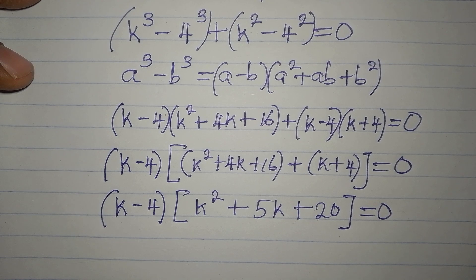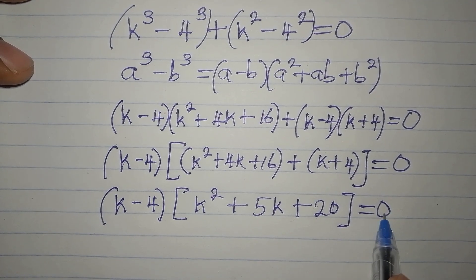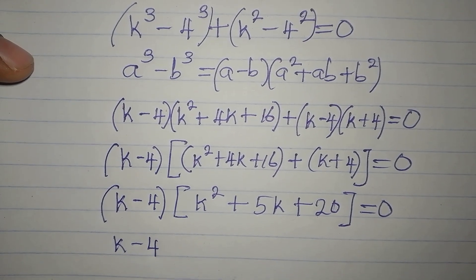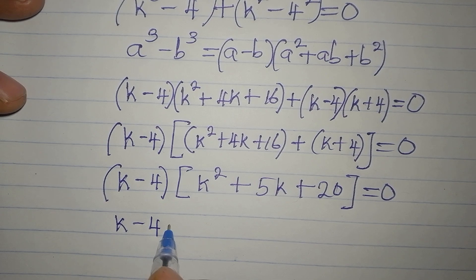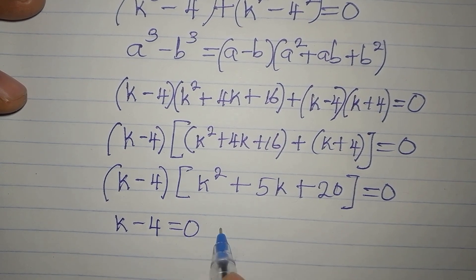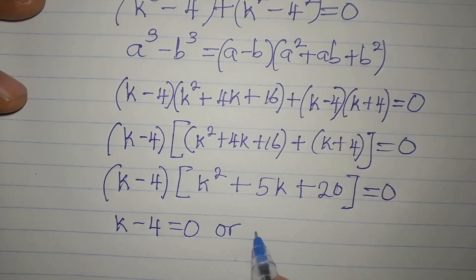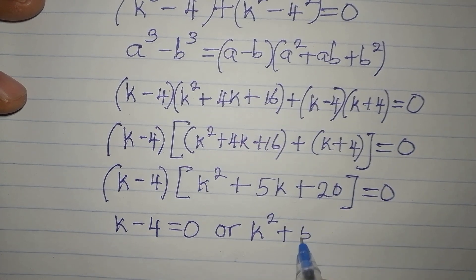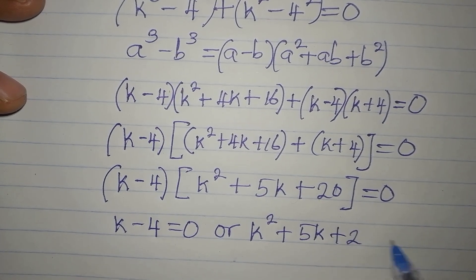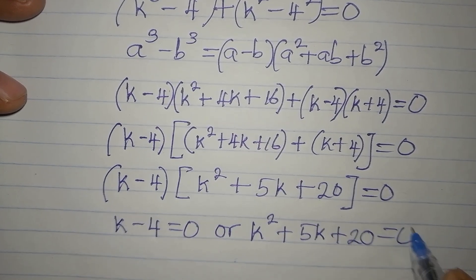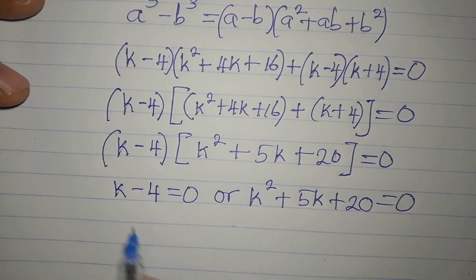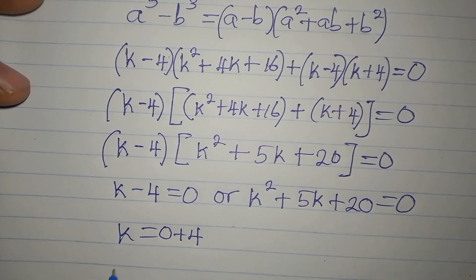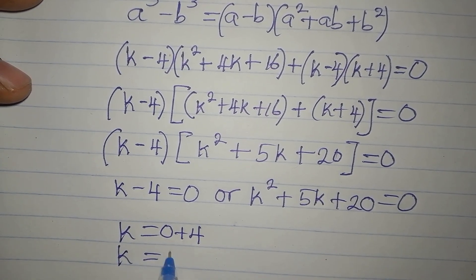We have two terms multiplied to get zero, so one of them must be zero. Either k − 4 = 0, giving us k = 4, or k² + 5k + 20 = 0.